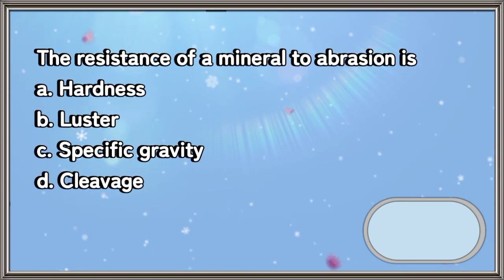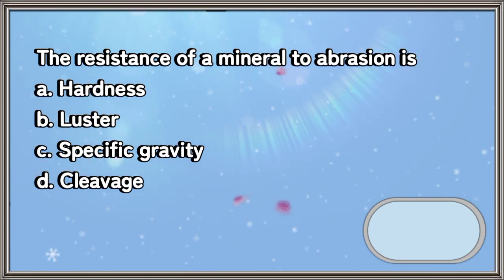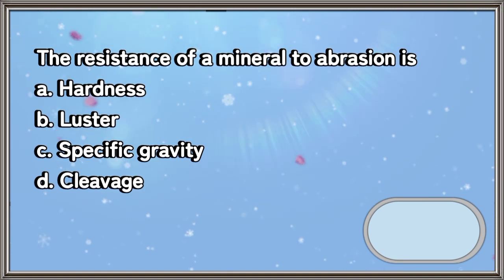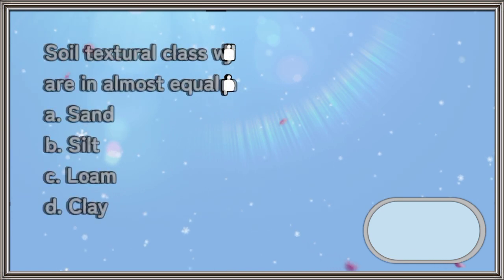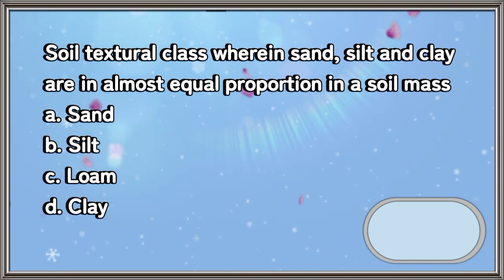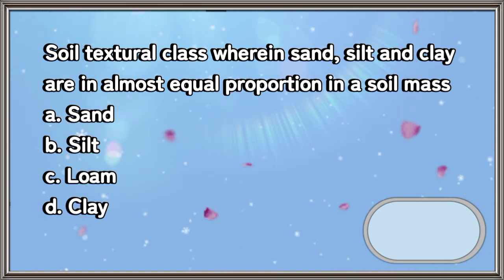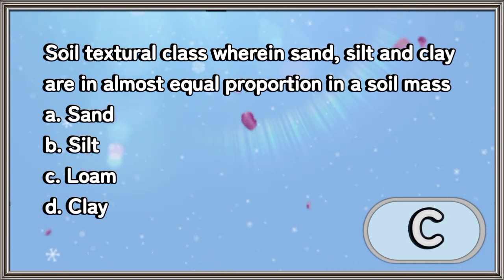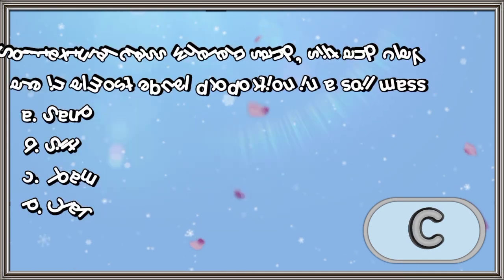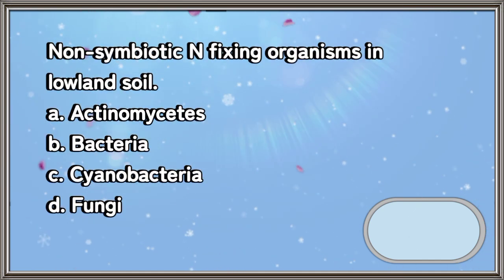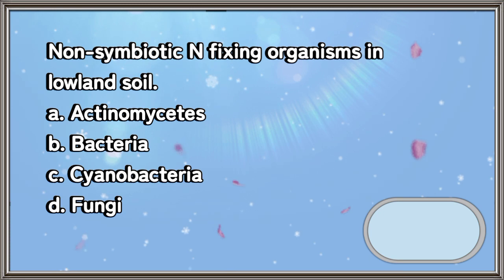The resistance of a mineral to abrasion is: a) hardness, b) luster, c) specific gravity, d) cleavage. The answer is letter A. Soil textural class wherein sand, silt, and clay are in almost equal proportion in a soil mass: a) sand, b) silt, c) loam, d) clay. The answer is letter C.